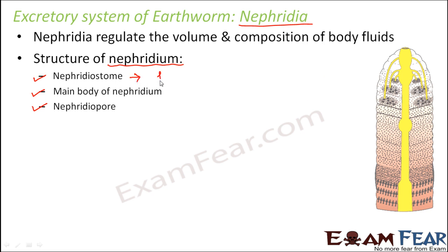The nephrostome is a funnel-shaped structure — like a funnel — where the coelomic fluid along with the waste enters. Just as a funnel helps pour liquid into a narrow-necked bottle, the nephrostome is the funnel where the coelomic fluid containing wastes enters.